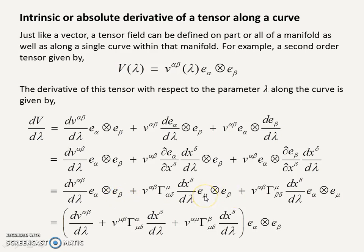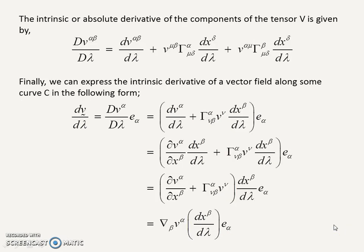We can do that by changing mu to alpha, swapping mu and alpha indices accordingly, which gives mu in the lower position. The same procedure applies to the beta index. The end result is that we can factorize out the common basis e^α ⊗ e^β. The intrinsic or absolute derivative of the components of the tensor V is then given by this expression — these are just the components, as shown earlier.